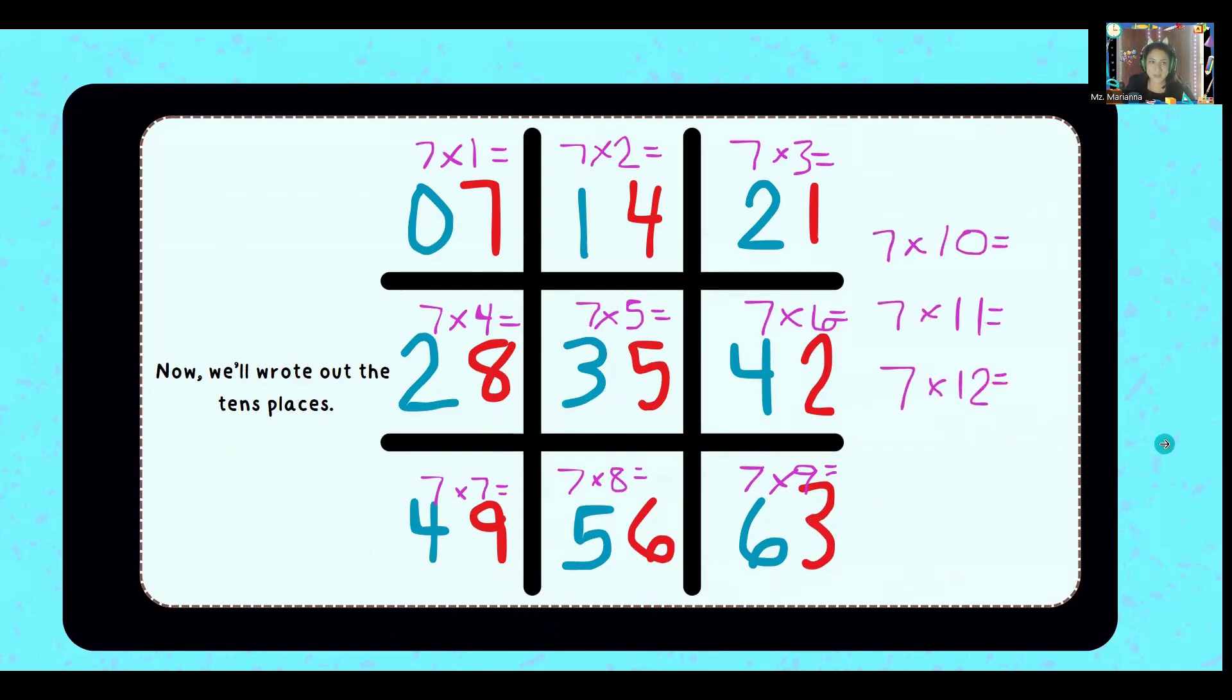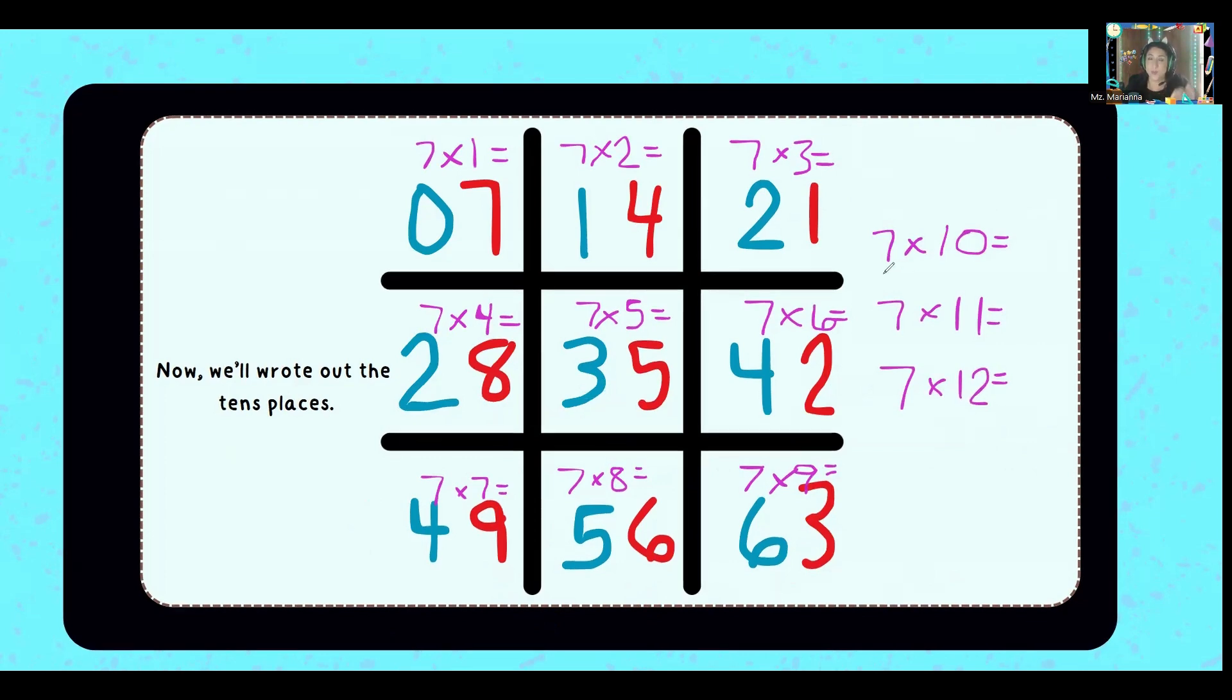The last ones that are left are seven times 10, but we know the tens hack. We rewrite the number and put a zero at the end for anything times 10. Seven times 10 is 70.